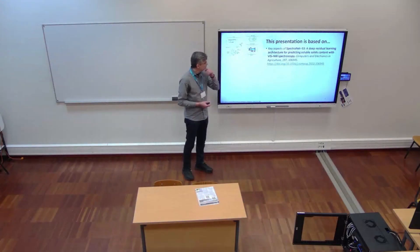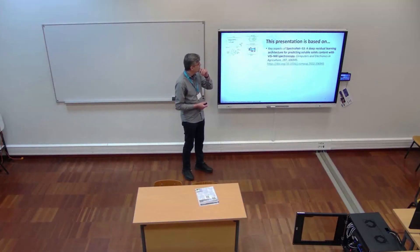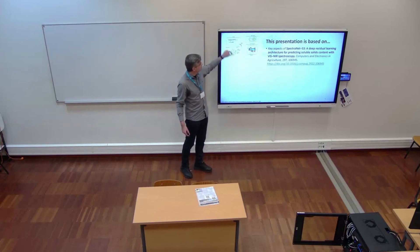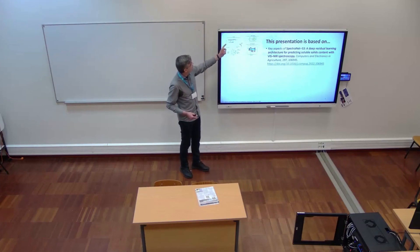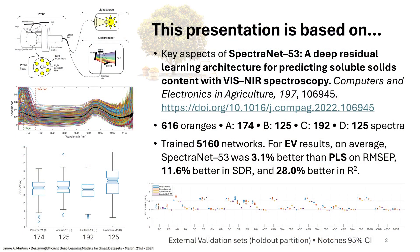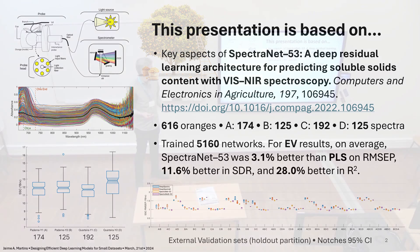The dataset was built by reading the spectrum using portable spectrometers on oranges in the field. This is basically a representation of the setup — we had a cup, an interactance probe; you would put the orange inside the cup through a slit, then close it and measure the spectra on the tree. These spectra have some sunlight contamination, so they are not measured inside a lab where you can control all variables — some of them will be noisy.